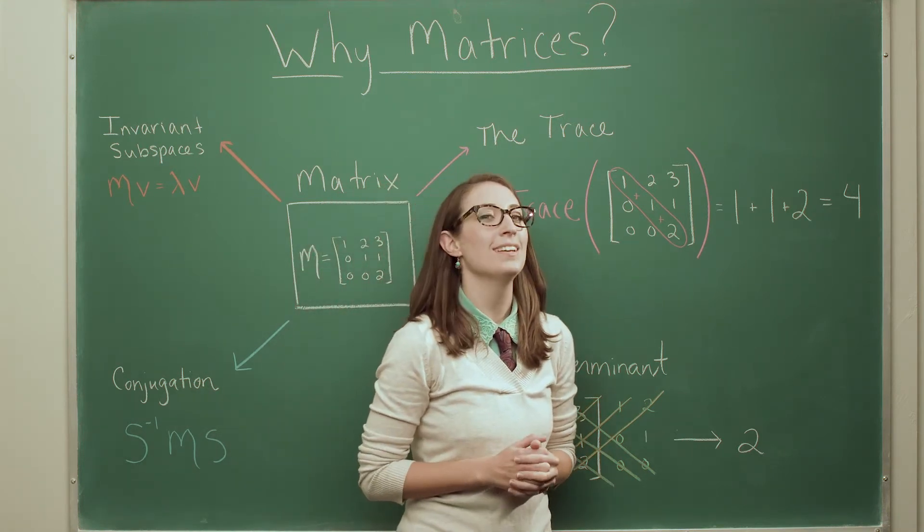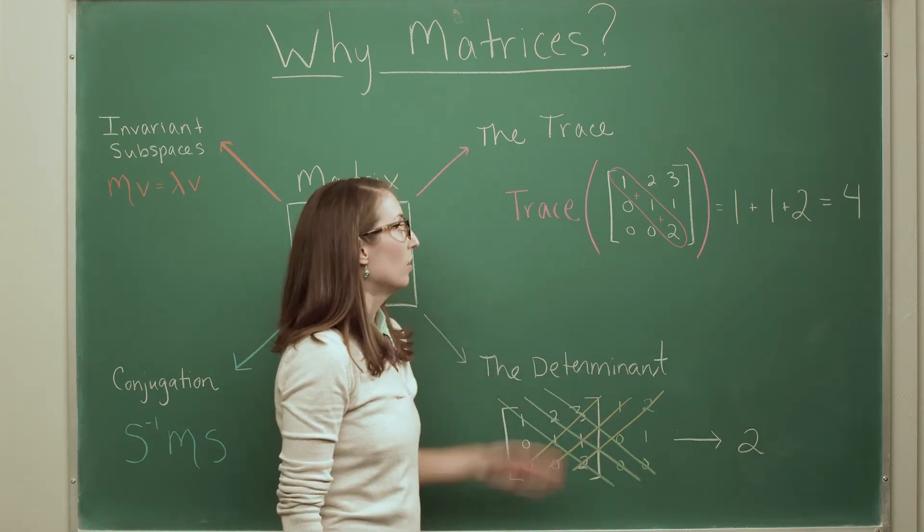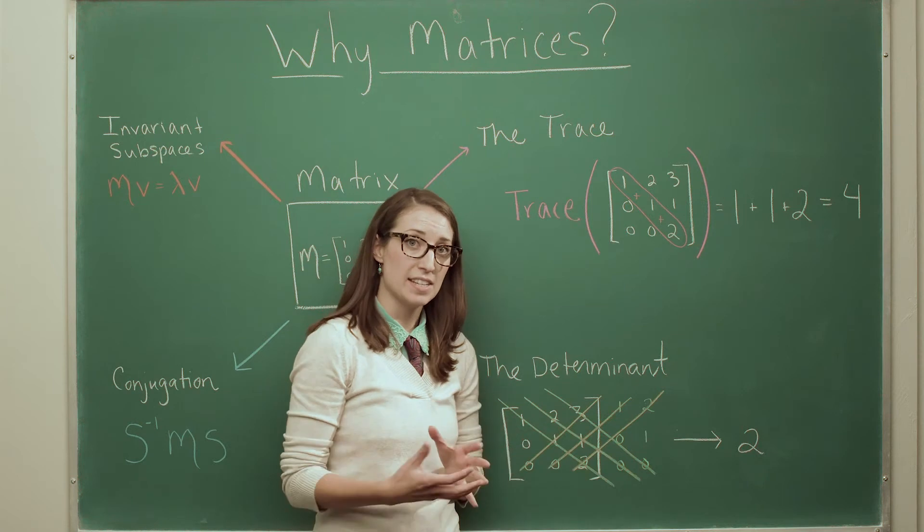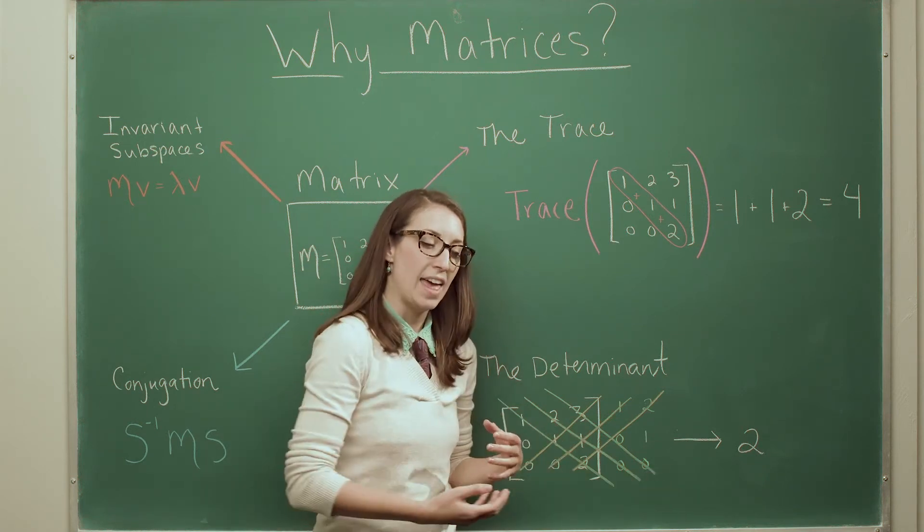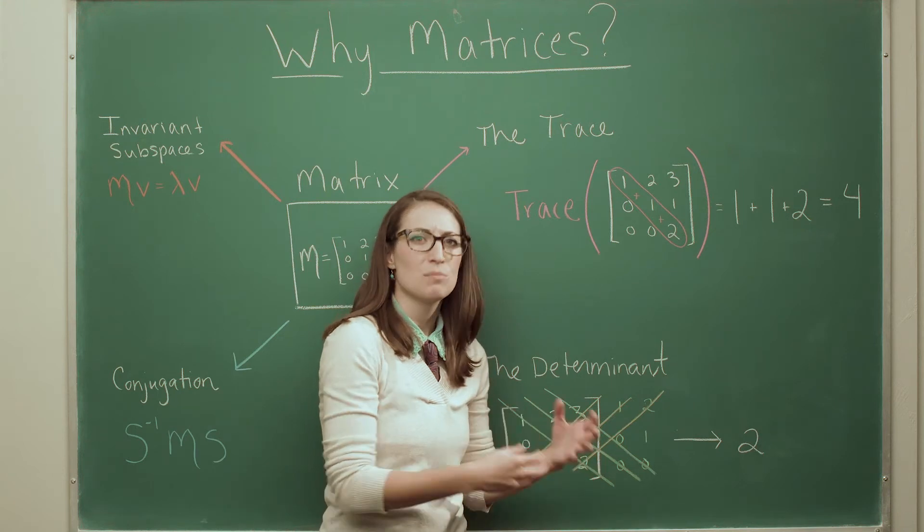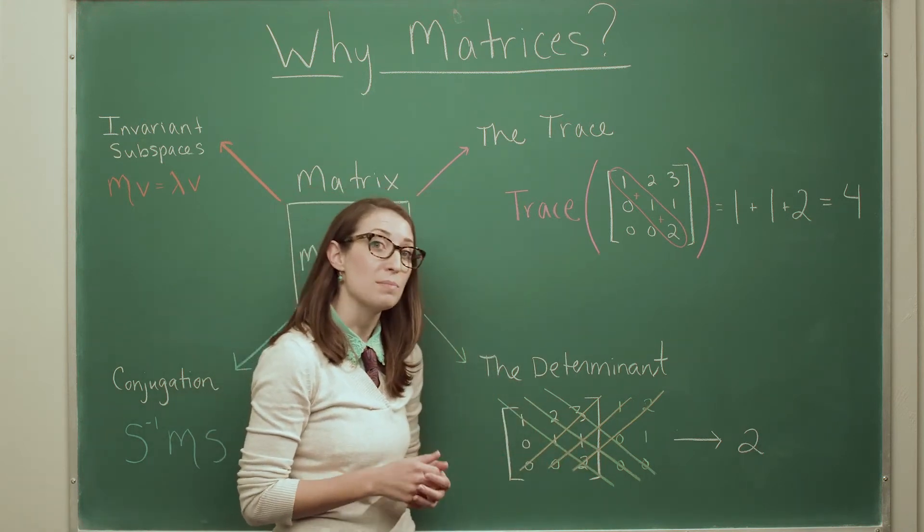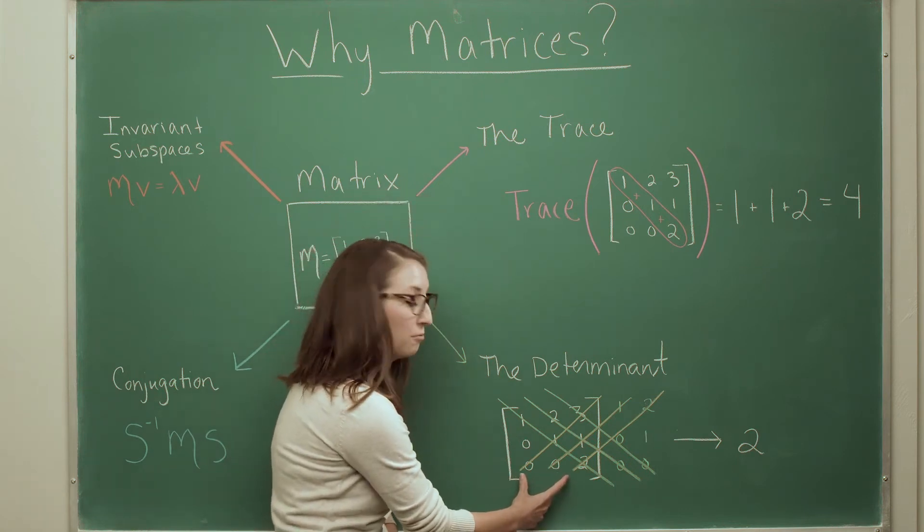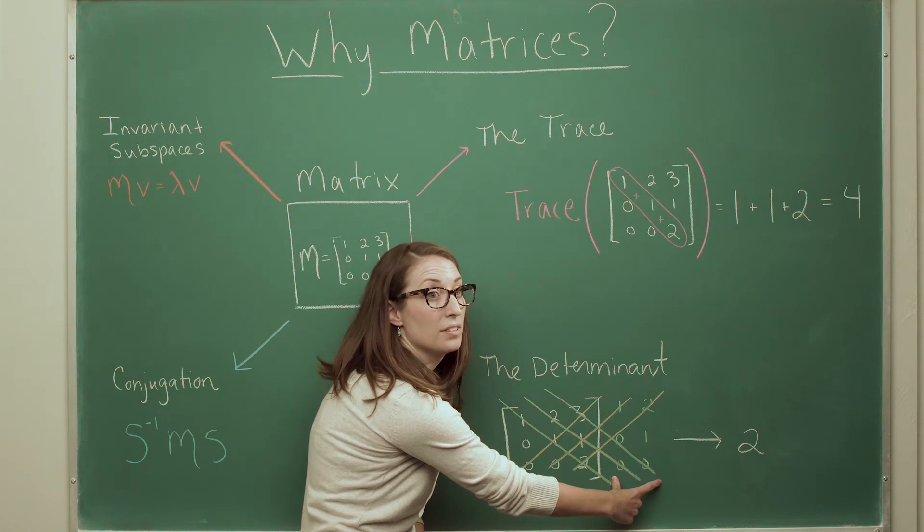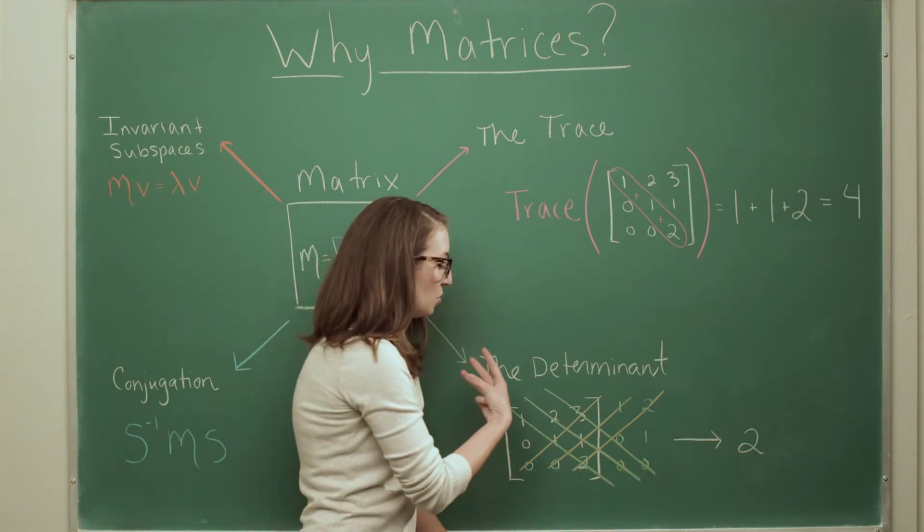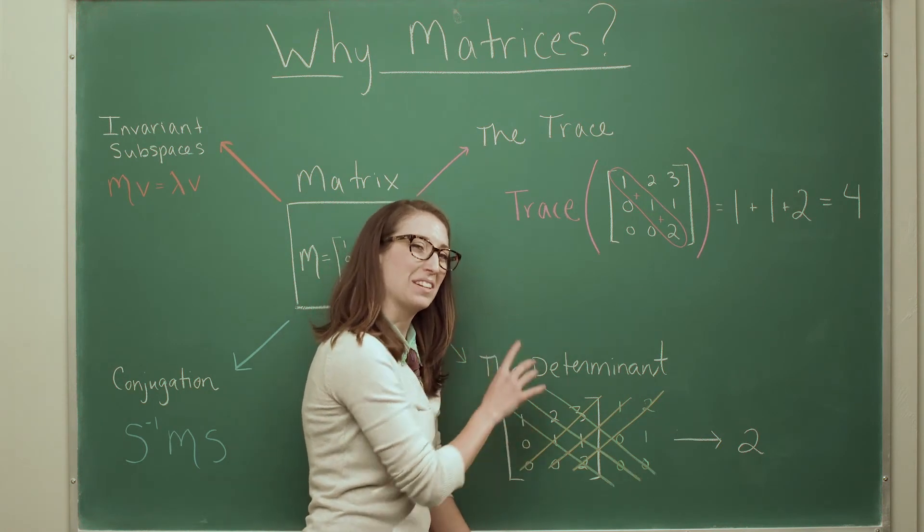Now, the coolest one, and my favorite is the determinant. So like the trace, the determinant takes in a matrix, does some tricky thing to it, and outputs a number. And that number is measuring some sort of quality of our matrix. So here's how you can compute a determinant of a three by three matrix. You take the first two columns of your matrix and write them next door to the matrix. Then you compute products along these diagonals. So a little more complicated than the trace.